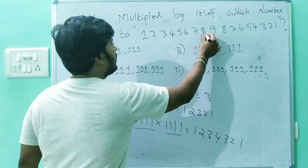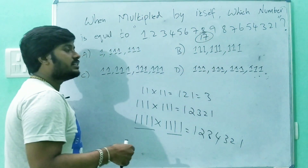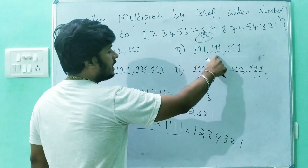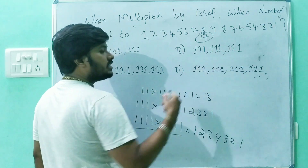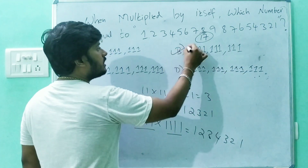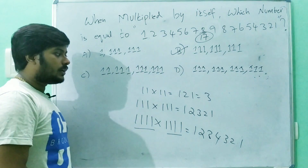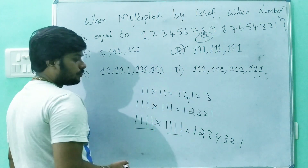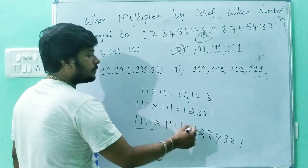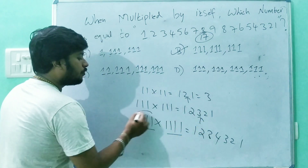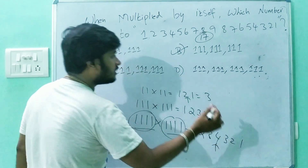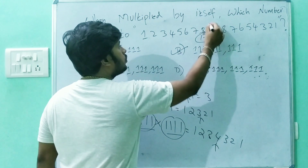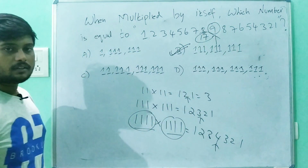Then 9 digits into 9 digits gives 17 digits. Wait — 9 plus 9 is 18, but the middle digit (9) is shared, so you have 17 digits. For our problem, 9 ones into 9 ones gives a 17-digit answer with 9 as the middle number. So tick option B — 9 ones.